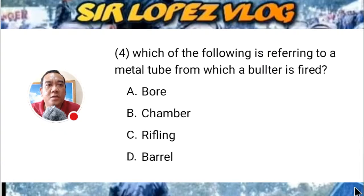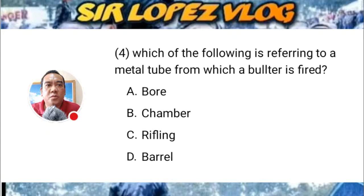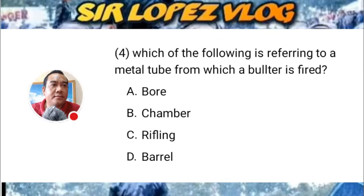Question number four: Which of the following is referring to the metal tube from which a bullet is fired? A) bore, B) chamber, C) rifling, or D) [option D]. Take note of the spelling correction on 'bullet.'